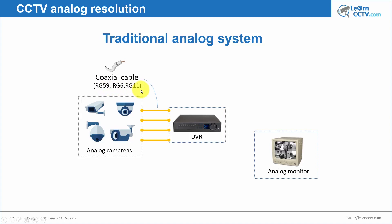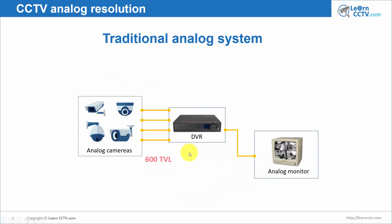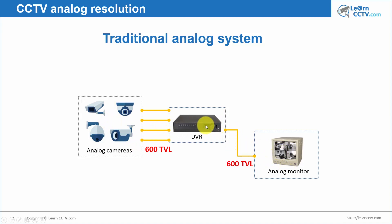We already talked about that in another class. And then you connect the coaxial cable — RG59, RG6, or RG11 — to an analog monitor. And then you have your 600 TV lines here for the monitor and 600 TV lines for your camera. Your camera generates 600 TV lines, and you can show it directly on a monitor, or you can convert this to digital.